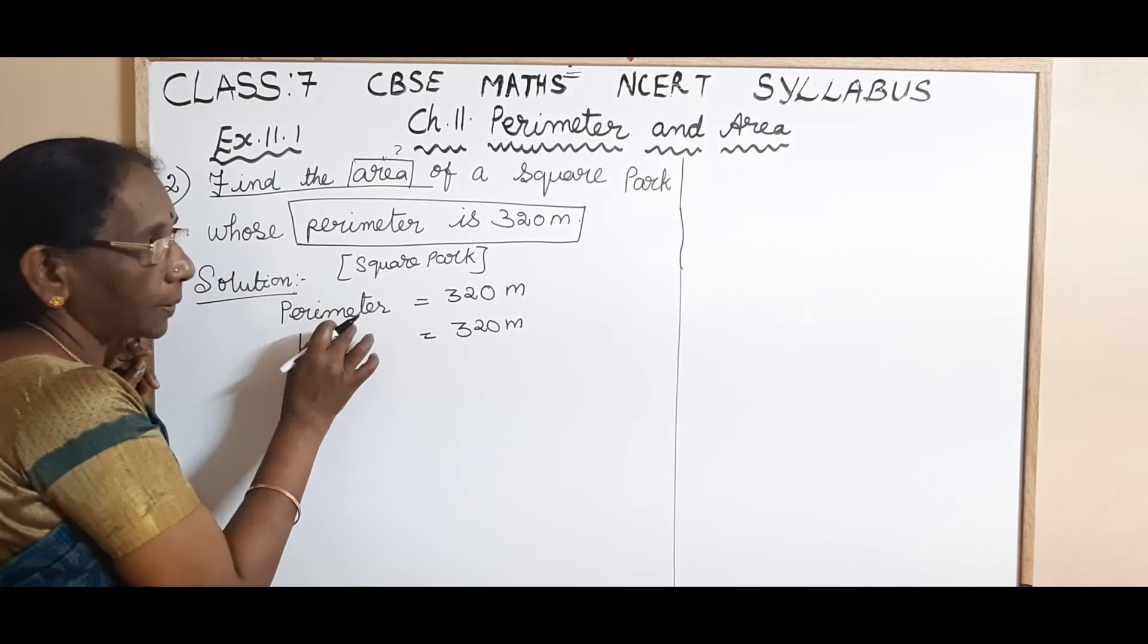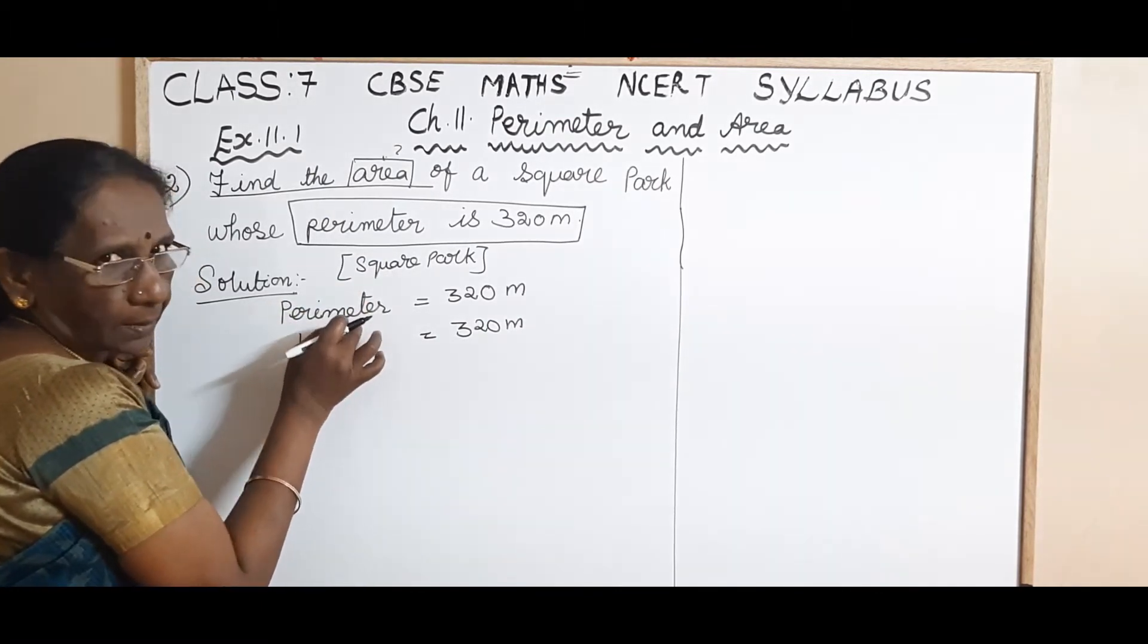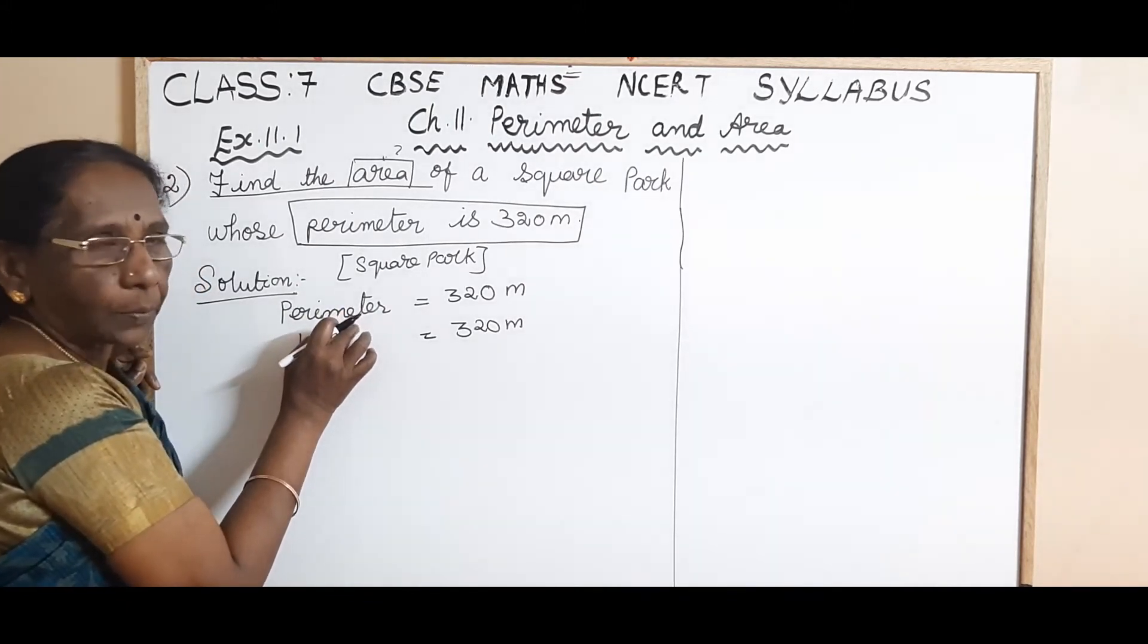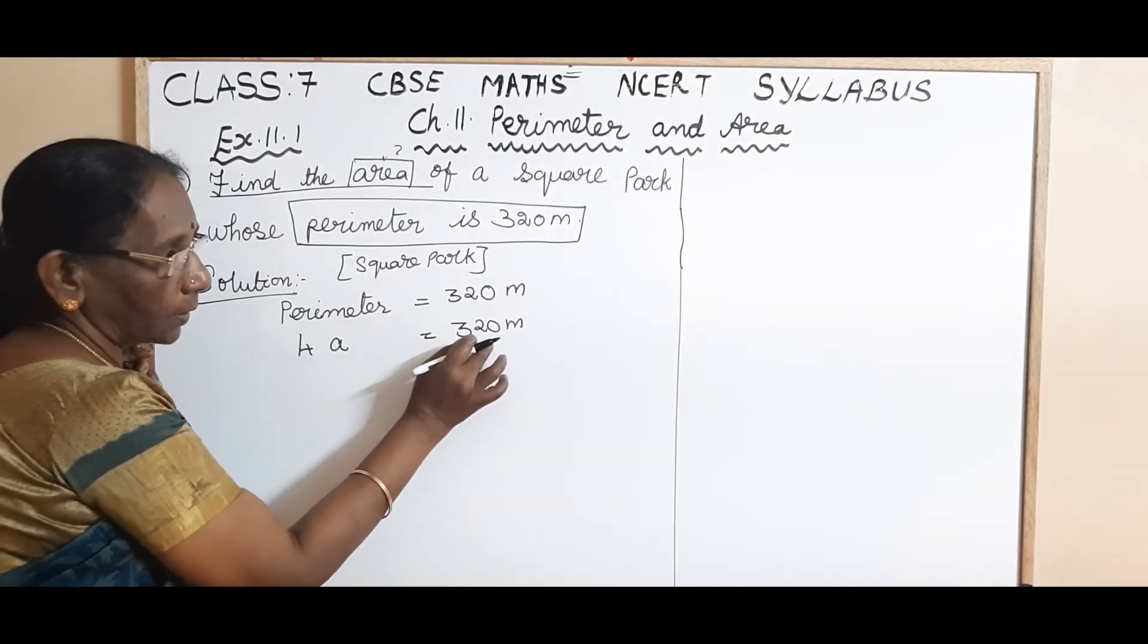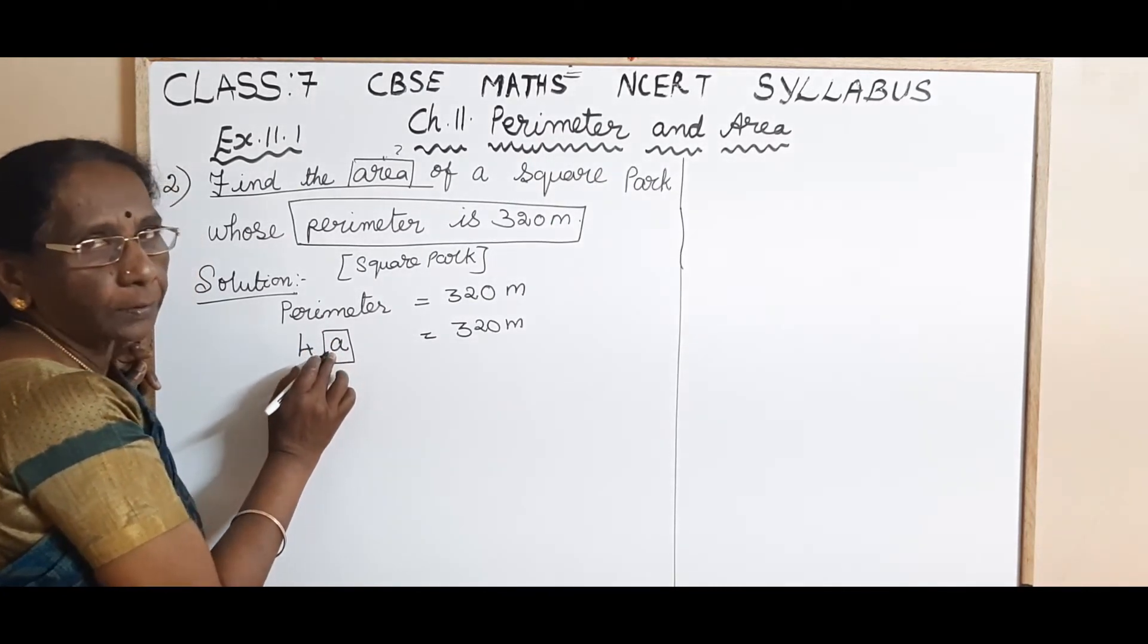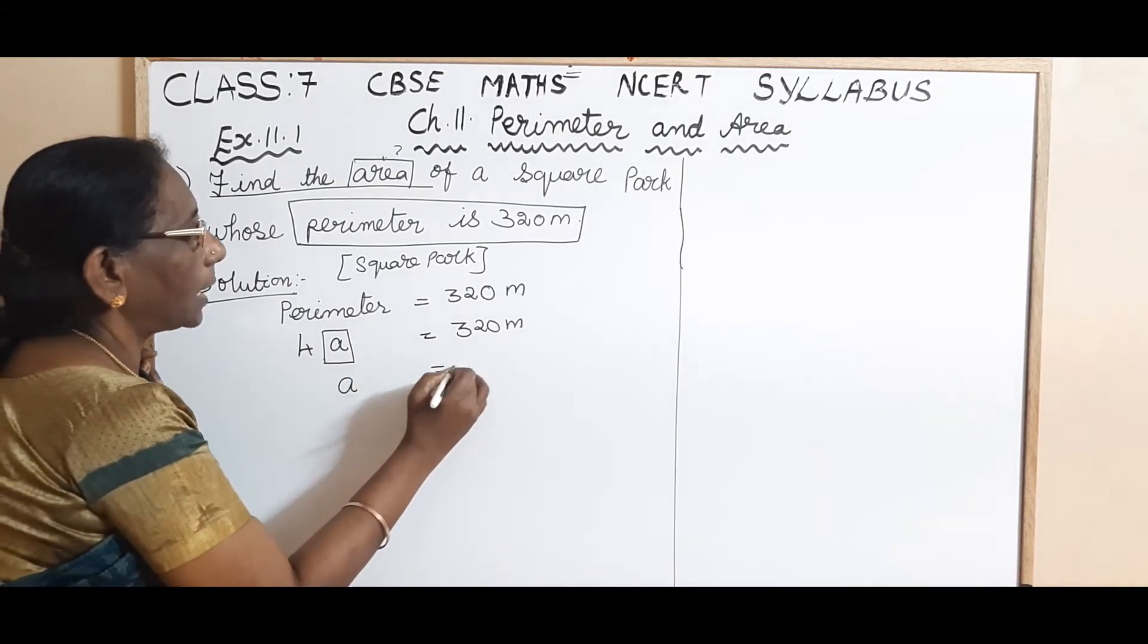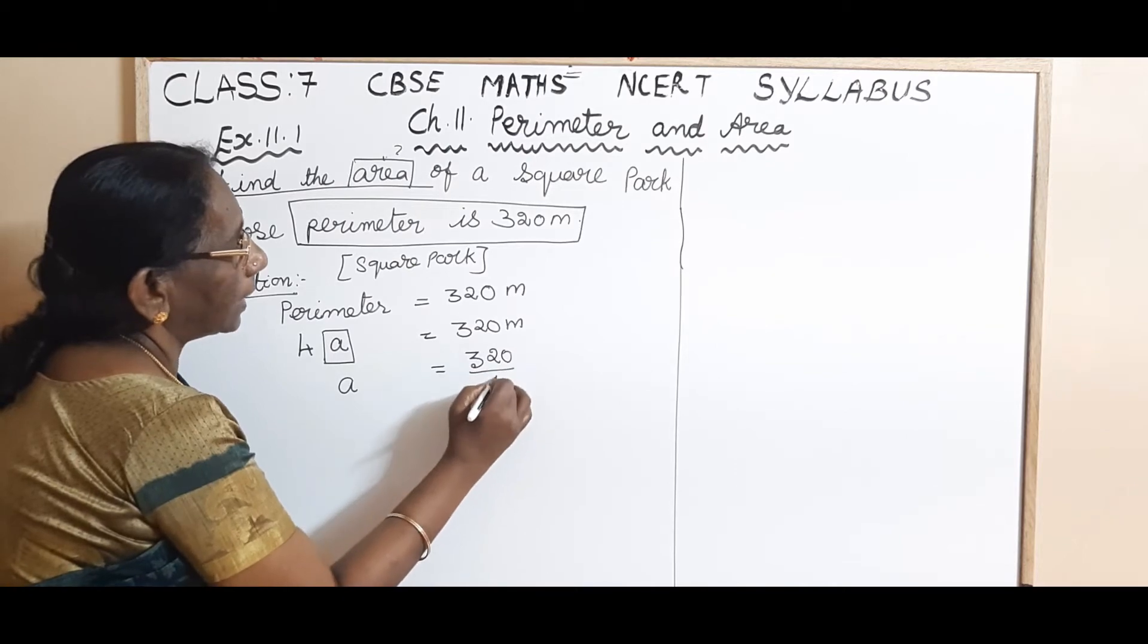So 4A is equal to 320 meter. You know what is the shape of the park is square. You know what is the perimeter. It is the given information. And you know the formula for the perimeter of the square, whereas 4A is equal to 320 meter. Now, we want only the side. A is the side of the square. We want only side.